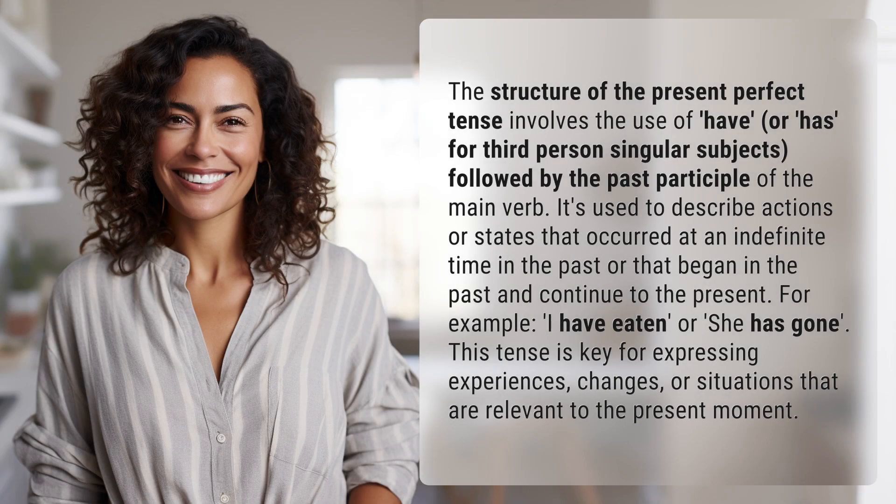The structure of the present perfect tense involves the use of have or has for third person singular subjects, followed by the past participle of the main verb. It's used to describe actions or states that occurred at an indefinite time in the past, or that began in the past and continue to the present.